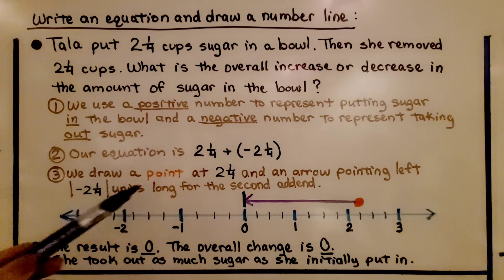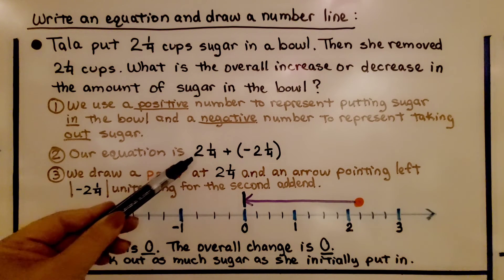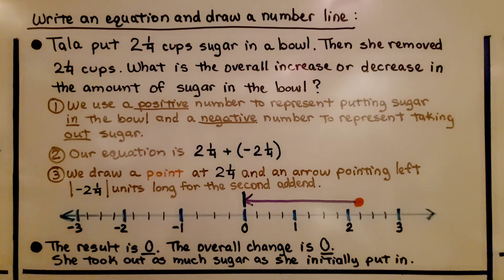Our equation is positive 2 and 1/4 plus negative 2 and 1/4. We draw a point at positive 2 and 1/4 and an arrow pointing left for the second addend. Because this is negative, we're heading towards the left. The result is zero. The overall change is zero. She took out as much sugar as she initially put in.